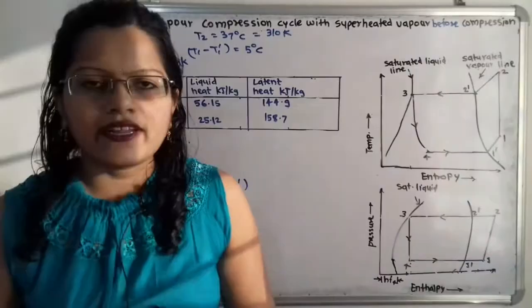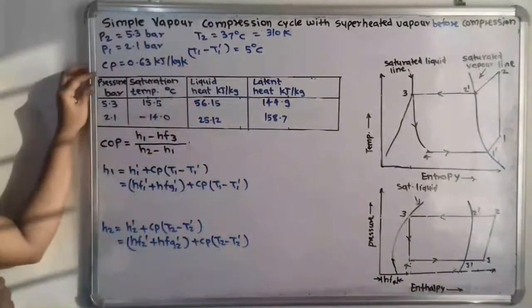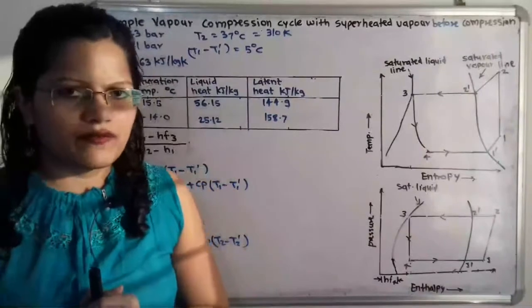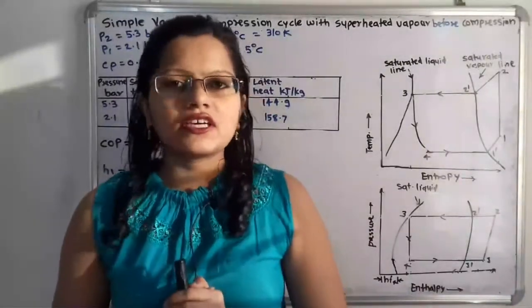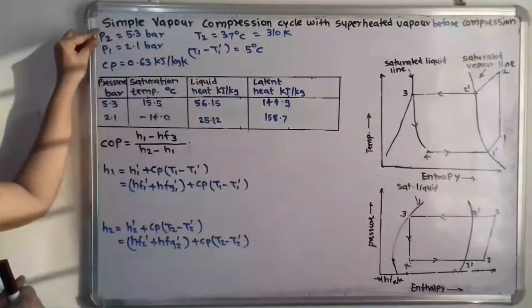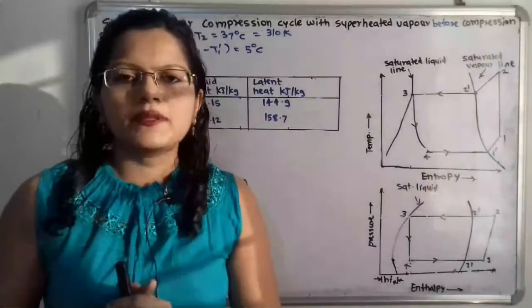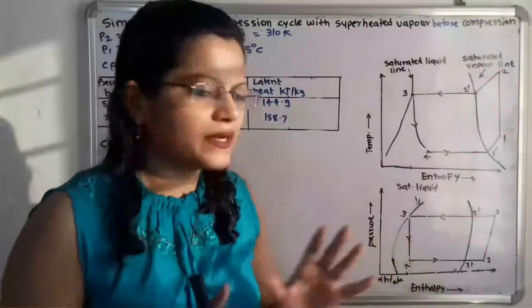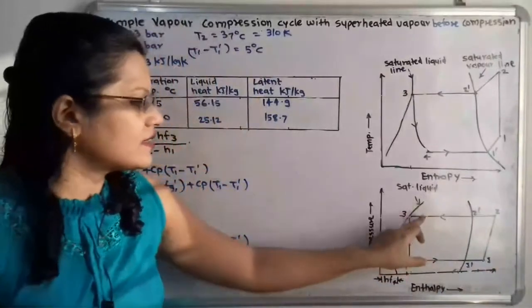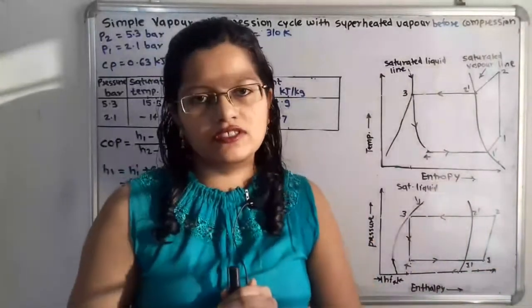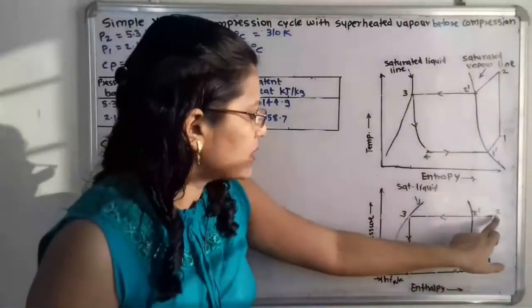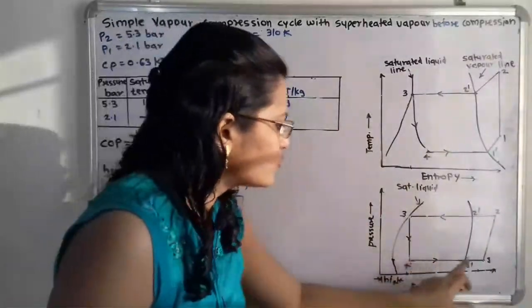We need to find the coefficient of performance of the plant using the data given in the table. The table provides pressure in bar, saturation temperature, liquid heat, and latent heat. Now let us understand the given data. Looking at the pressure-enthalpy diagram, processes 4 to 1 and 2 to 3 take place at constant pressure. Process 2 to 3 is at higher pressure and process 4 to 1 is at lower pressure.